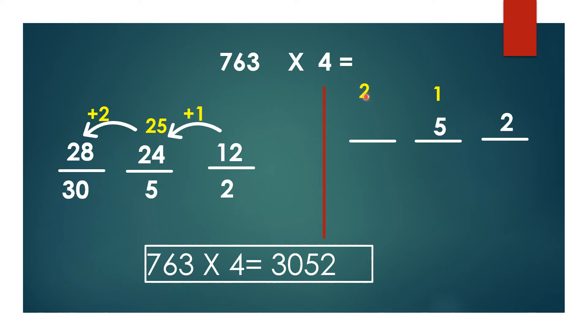So 2 here and 5 you write in that line. Now 4 × 7 = 28, 28 plus 2 is 30. So the answer is 3052. Directly in one step you can get the answer.